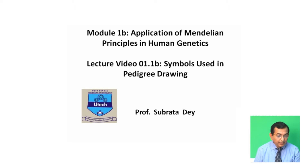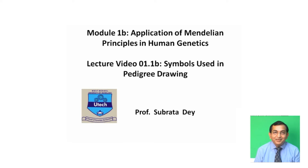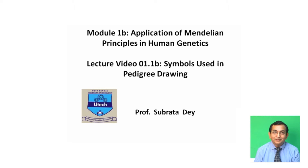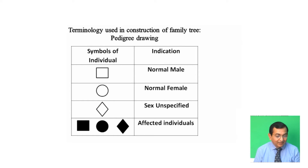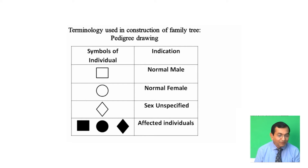In this module we will discuss the application of Mendelian principles in human genetics. Pedigrees are diagrams that show relationships among members of a family.